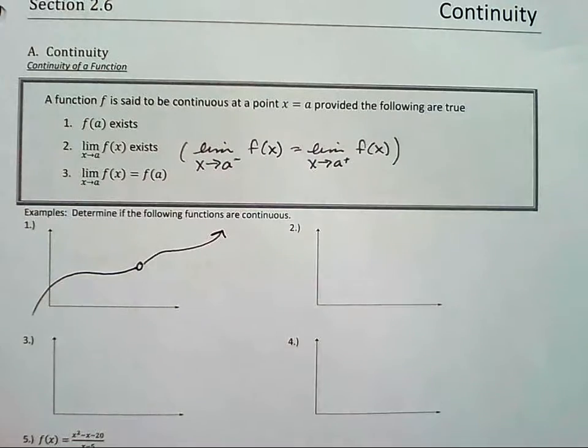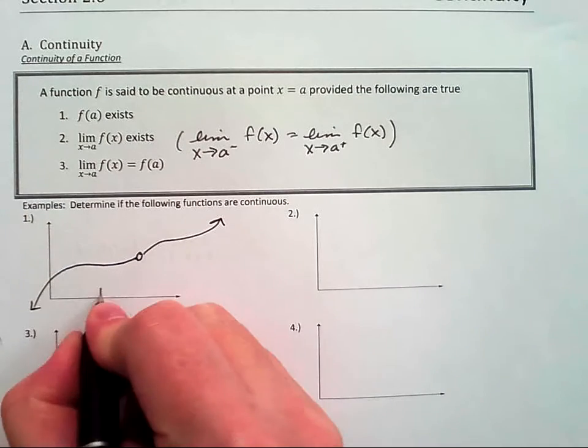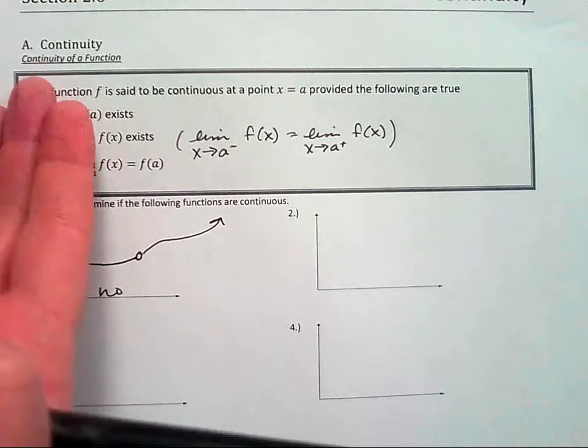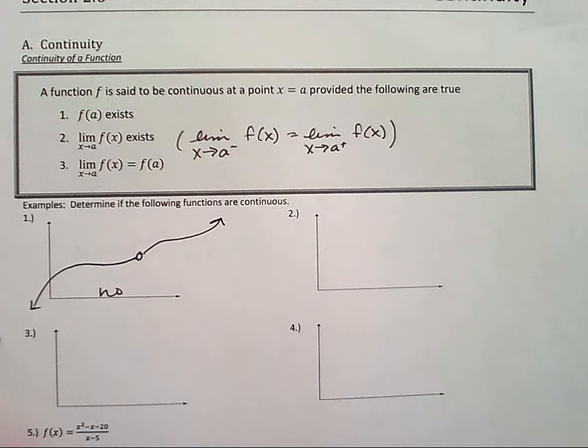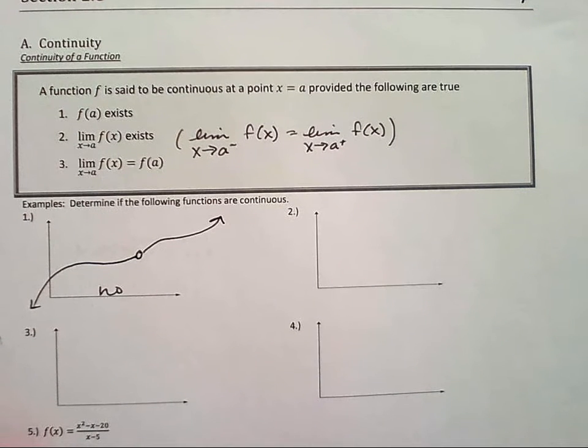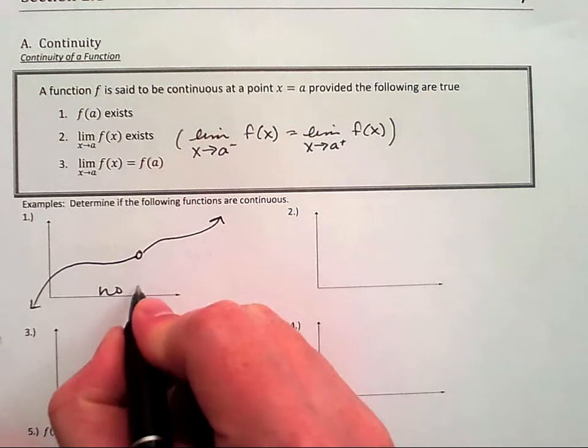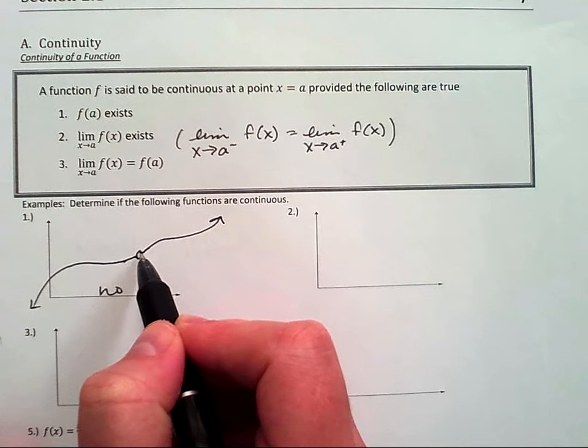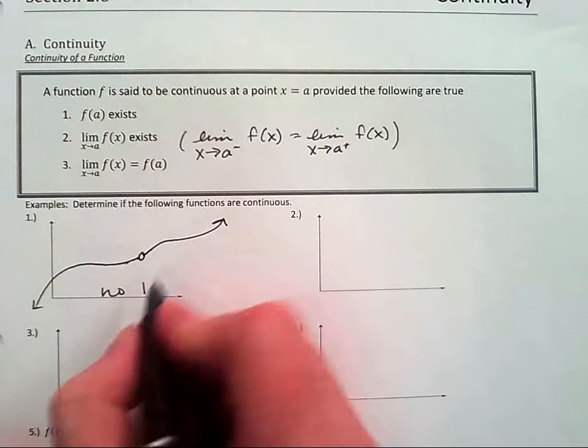Is this continuous? No, why not? Has a hole, so which one fails? Which of the three above fails? Number one. The limit right here exists because the limit from the left equals the limit from the right. So two is good, but three is not good.